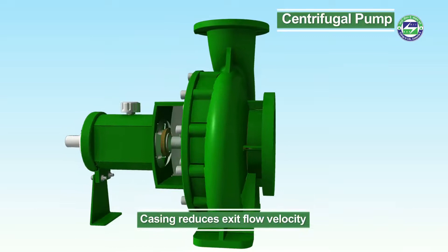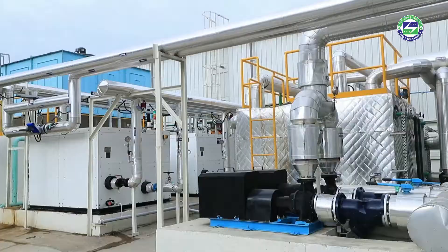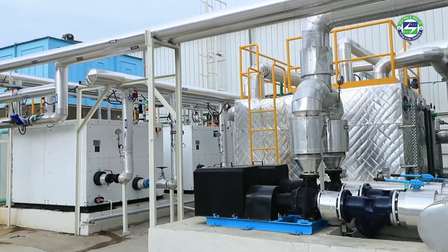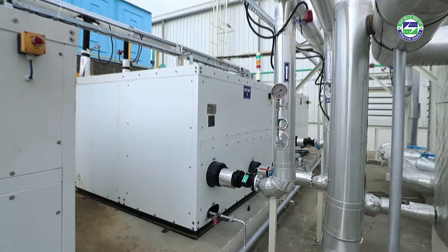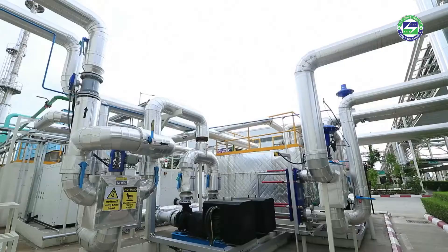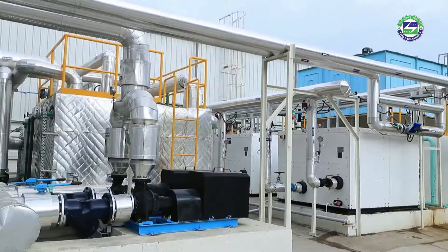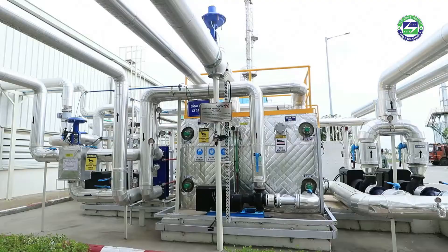Improper selection of pumps and poor control mechanisms lead to inefficient operations. Before a centrifugal pump is selected, its application must be clearly understood. Energy efficiency of a pumping system relates to selection of the correct pump based on application and its control mechanism.